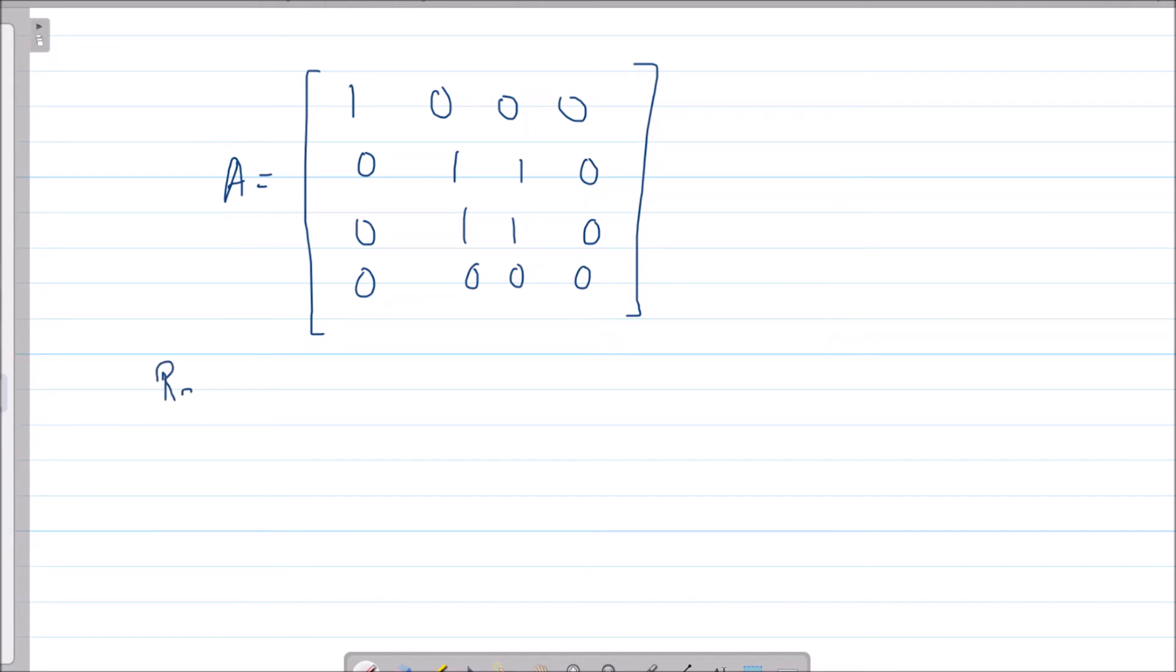If you do R3 - R2, then what I get is the R matrix, the row reduced echelon form: [1, 0, 0, 0; 0, 1, 1, 0; 0, 0, 0, 0; 0, 0, 0, 0]. This is my R.